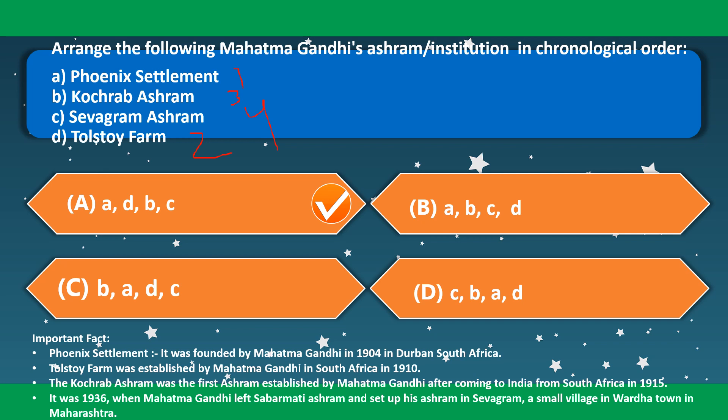Phoenix Settlement was founded by Mahatma Gandhi in 1904 in South Africa. Tolstoy Farm was established in South Africa in 1910. Kochrab Ashram was the first ashram established by Gandhi after returning to India from South Africa in 1915. In 1936, Gandhi left Sabarmati Ashram and set up his ashram in Sevagram, a small village in Wardha district in Maharashtra.